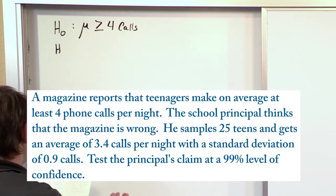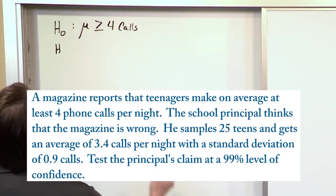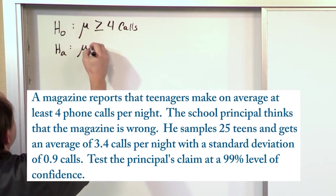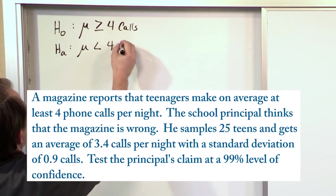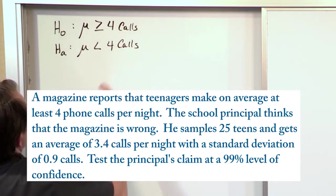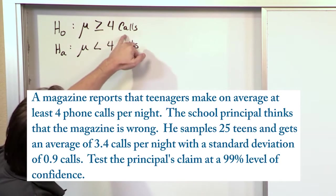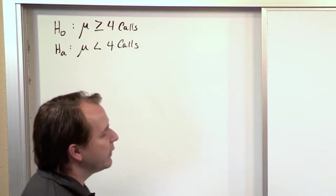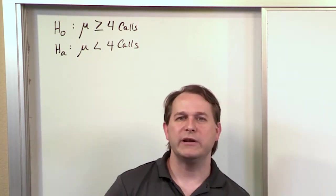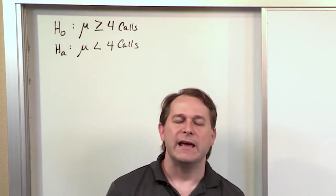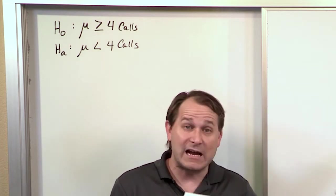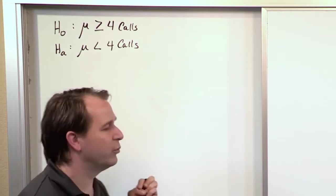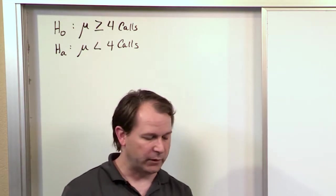The principal thinks the magazine's wrong. If the null hypothesis is greater than or equal to four calls, then the alternate hypothesis has to be the mathematical opposite. So the principal must be thinking that teens are making less than four calls — so 3.8, 3.9, 3.95, all the way up to but not including four calls. That's the alternate or research hypothesis.